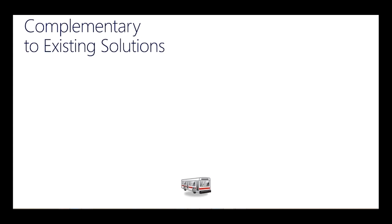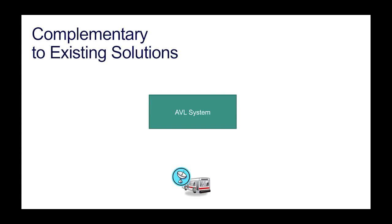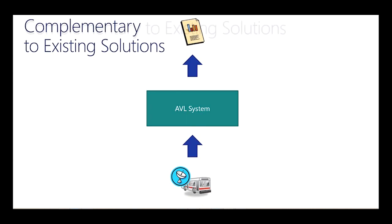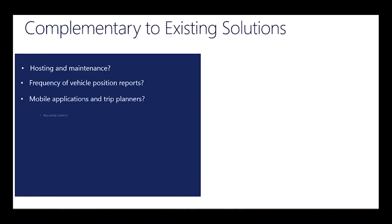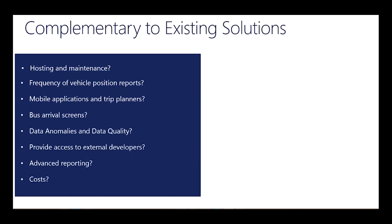TransitIQ is not trying to be a system that replaces everything for everyone. We are complementary to existing solutions. Typically a transit agency has a device deployed on the bus — one of those black boxes — that submits data to something called an AVL system, automatic vehicle location. From there you collect additional information and see some basic reporting. The problems typically associated with those solutions relate to hosting costs, how difficult they are to maintain, whether the update frequency is good enough for real-time customer use, and whether you have mobile applications and external data access.